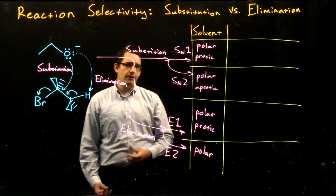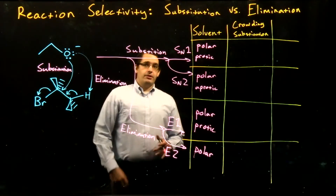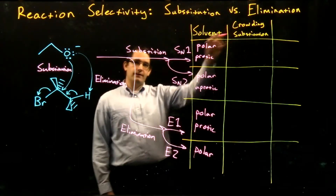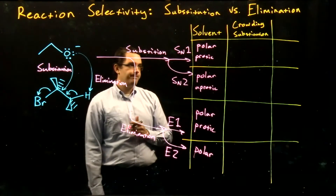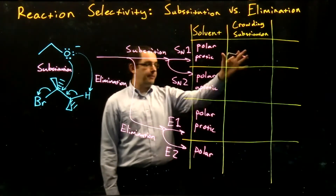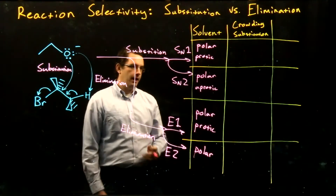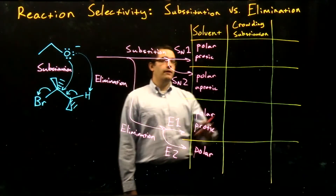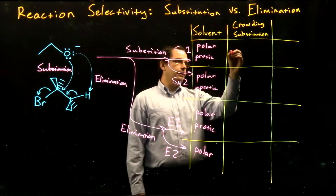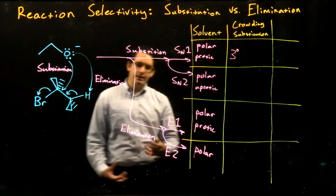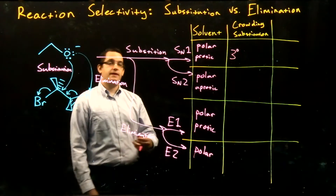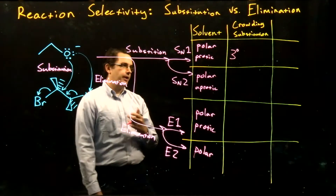The next key factor for choosing between our menu of reactions is the crowding and/or the substitution pattern of our reactants. For our SN1 reaction, we do want to see a highly substituted reactant — we want something that's tertiary, ideally. That leads to our tertiary carbocation, which is our more stable carbocation that allows the SN1 reaction to proceed more quickly.